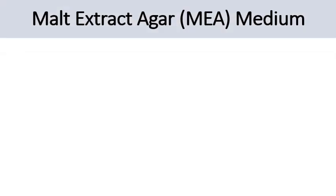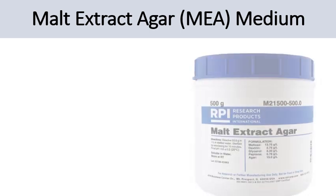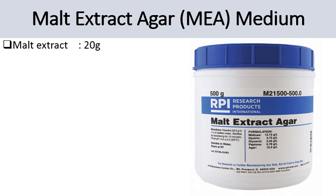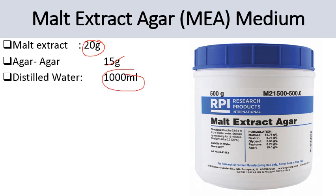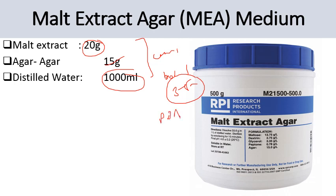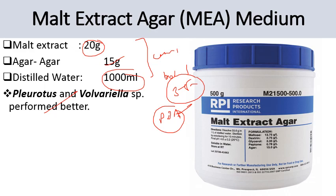Next comes malt extract agar (MEA) medium. Its constituents are malt extract 20 grams, agar 15 grams, and distilled water 1000 ml. To prepare: put all ingredients together in a conical flask, boil for three to five minutes, and the other steps are just similar to PDA medium preparation. This medium is also used for the growth of Pleurotus and Volvariella species, which perform better on this medium.